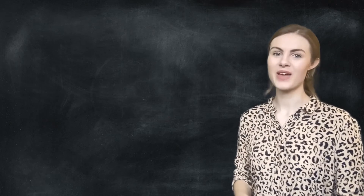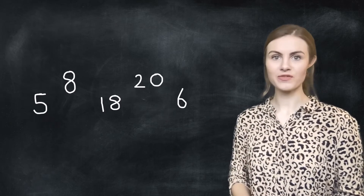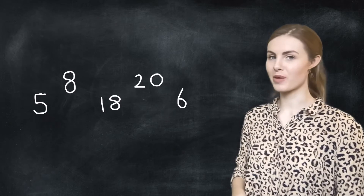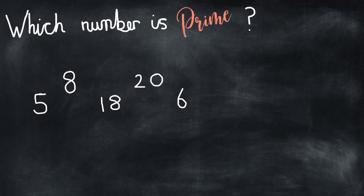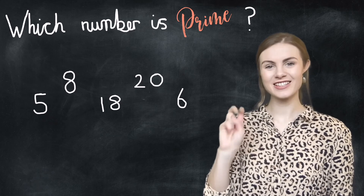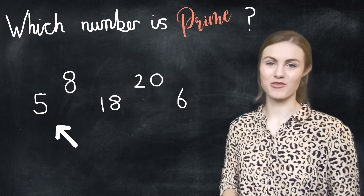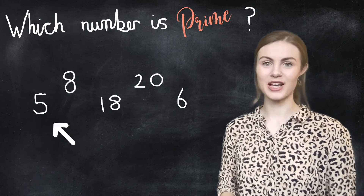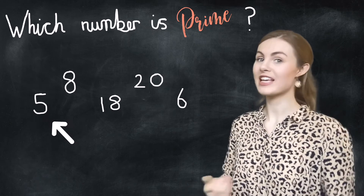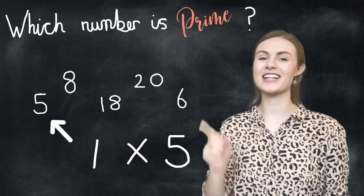Your turn! Have a look at these numbers — one of these numbers is a prime number, can you spot it? Answers in three, two, one... yep, it's the number five, because the number five is only divisible by one and itself.